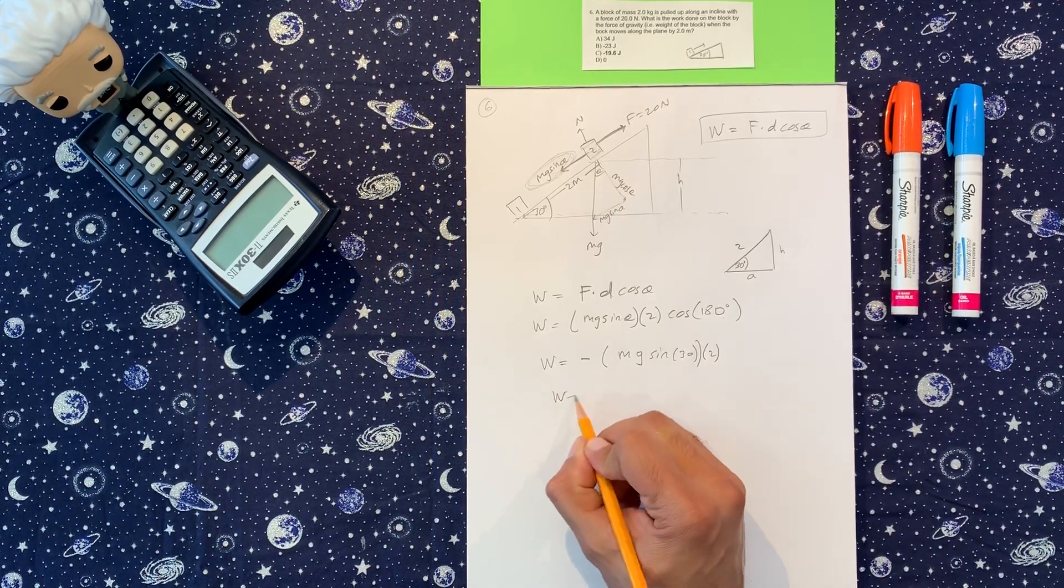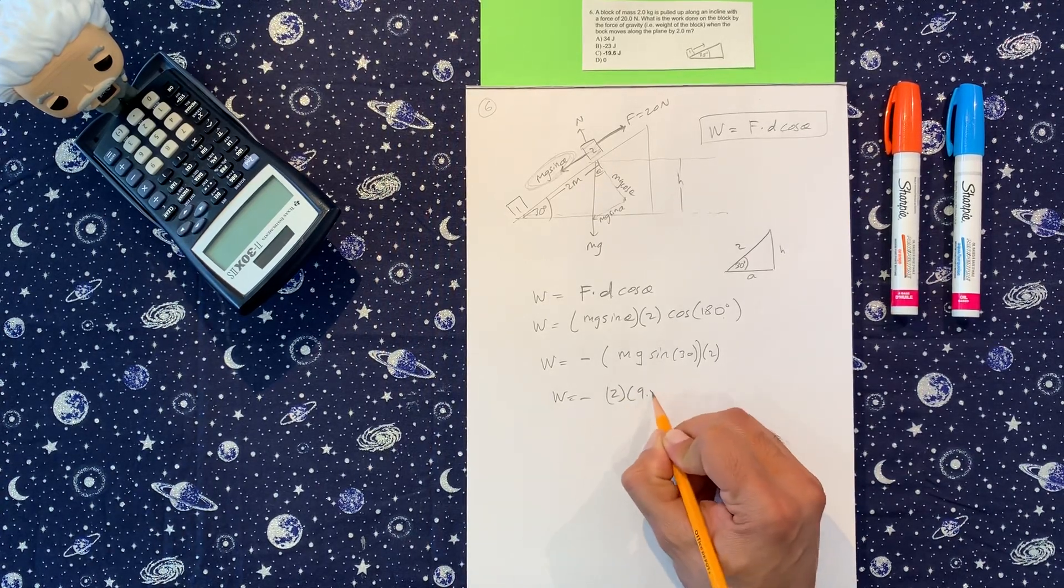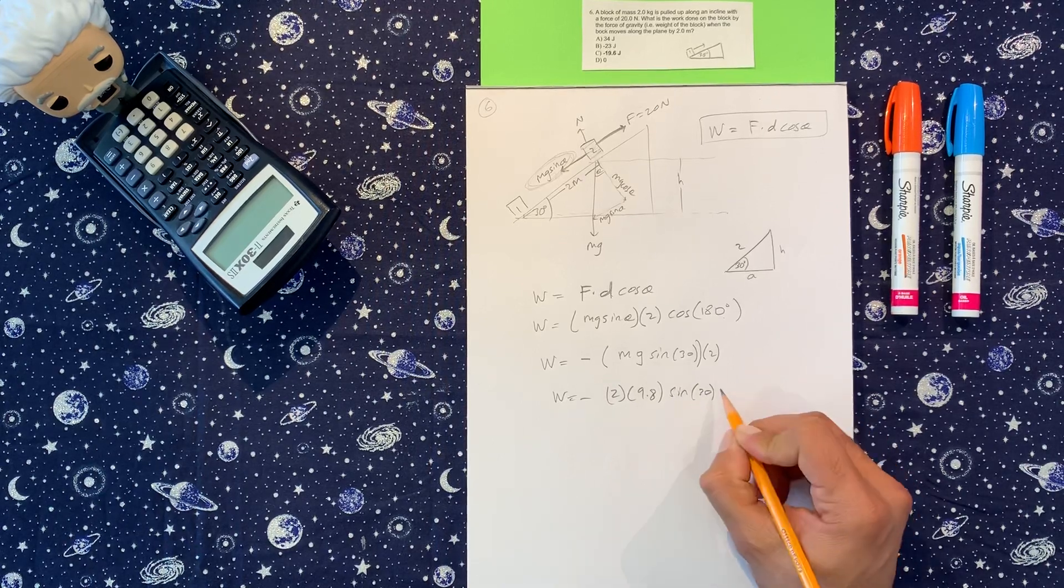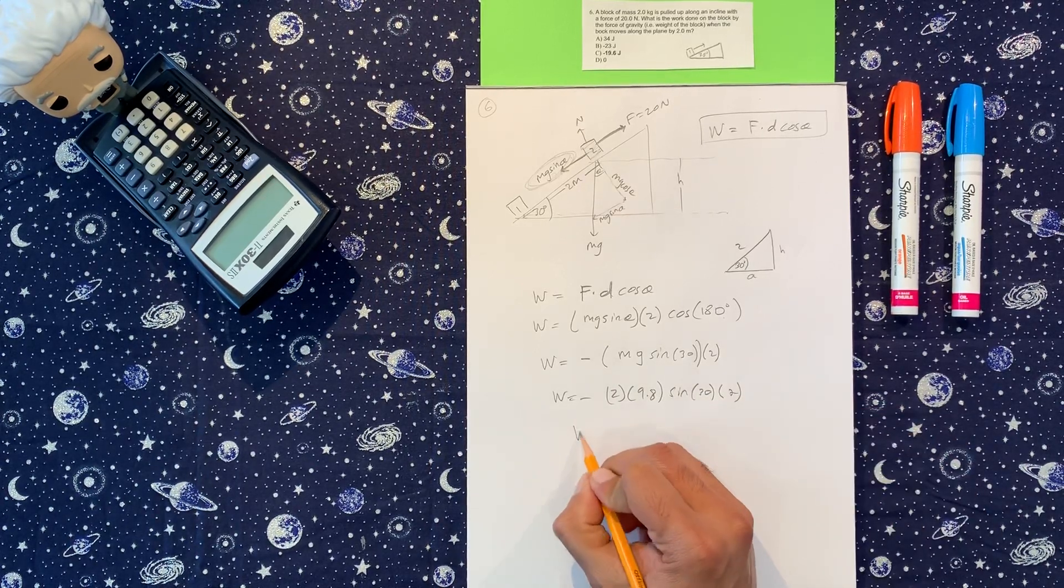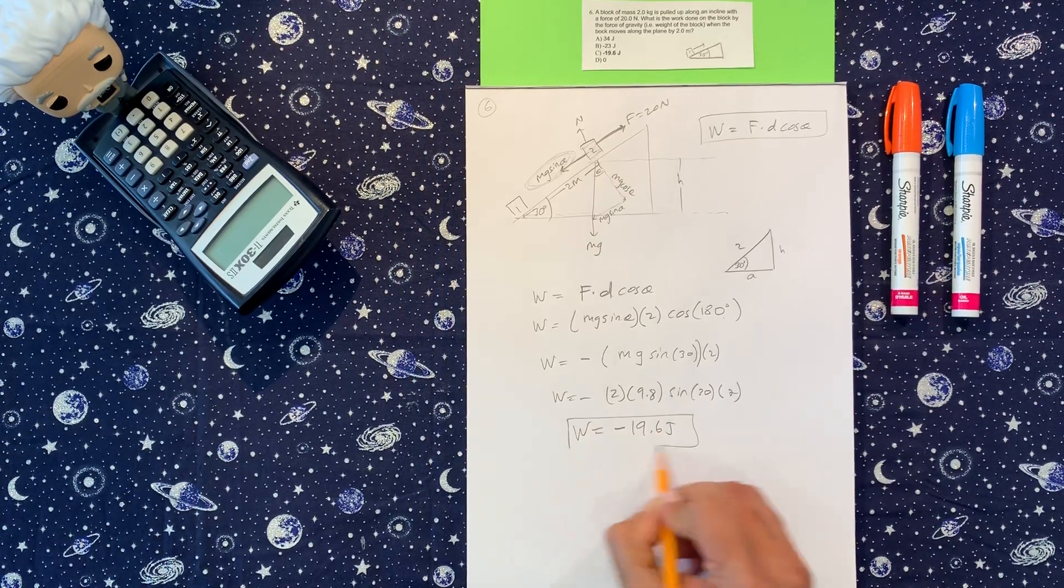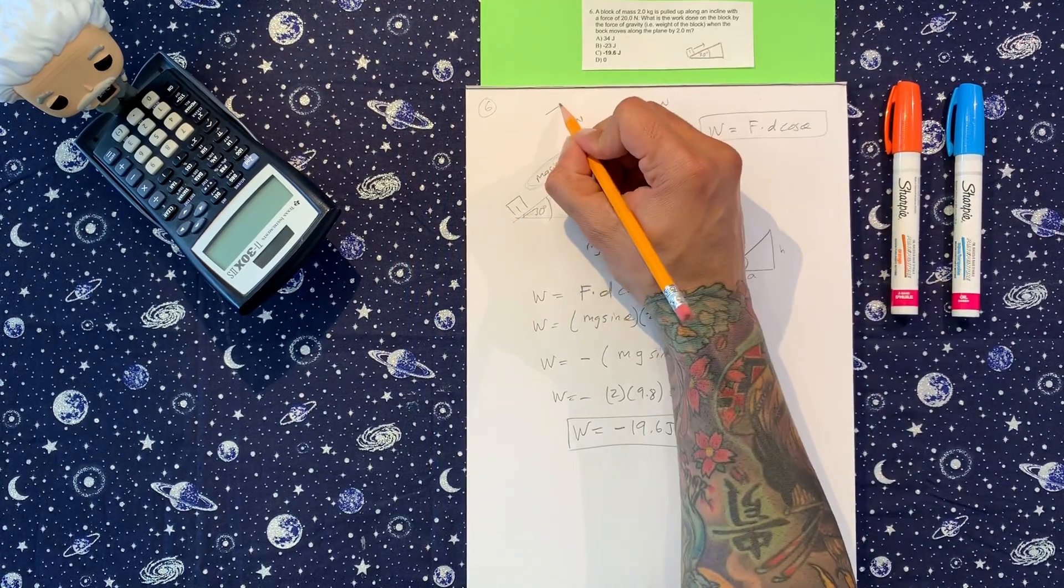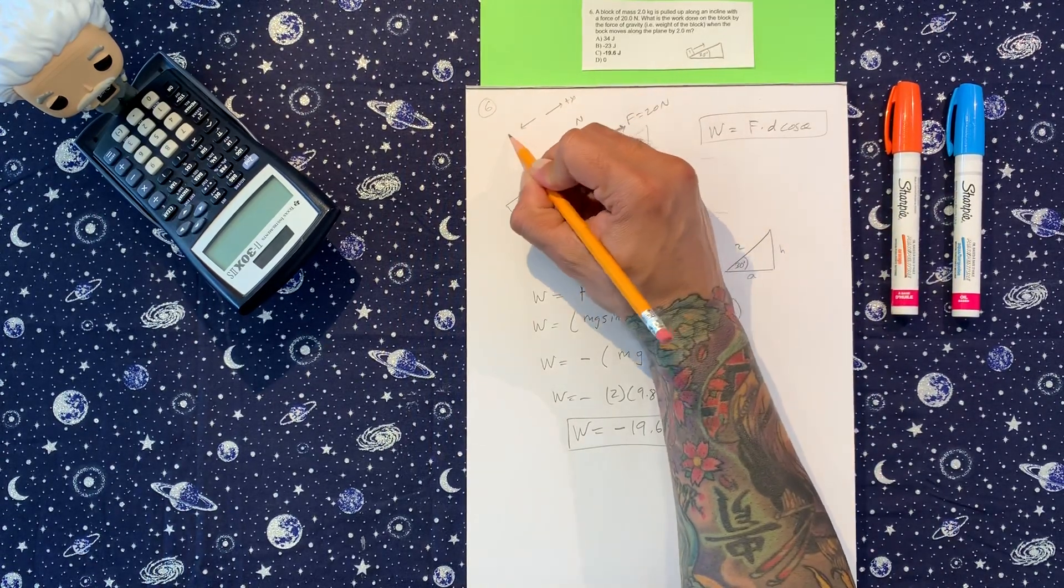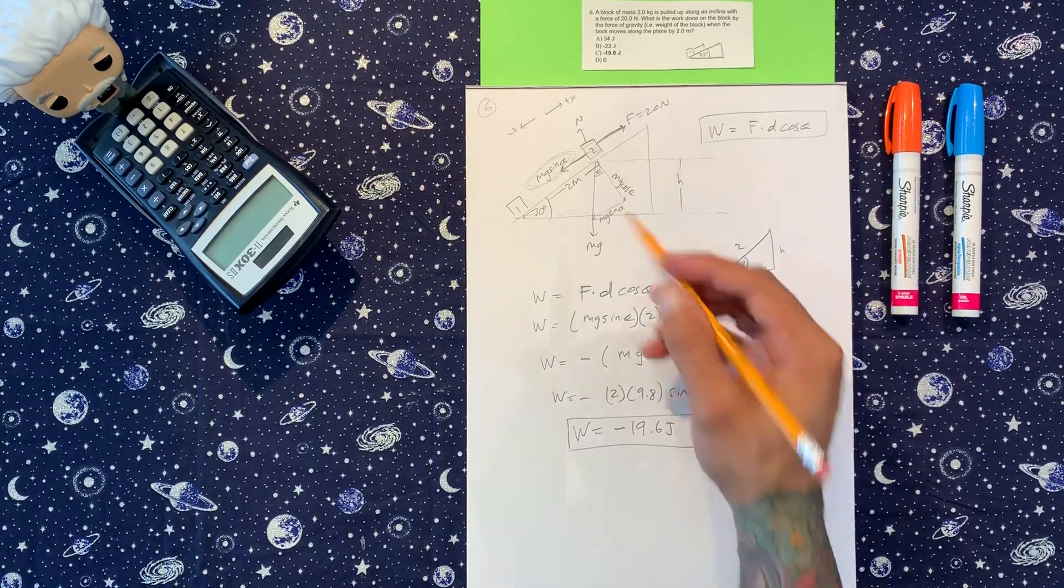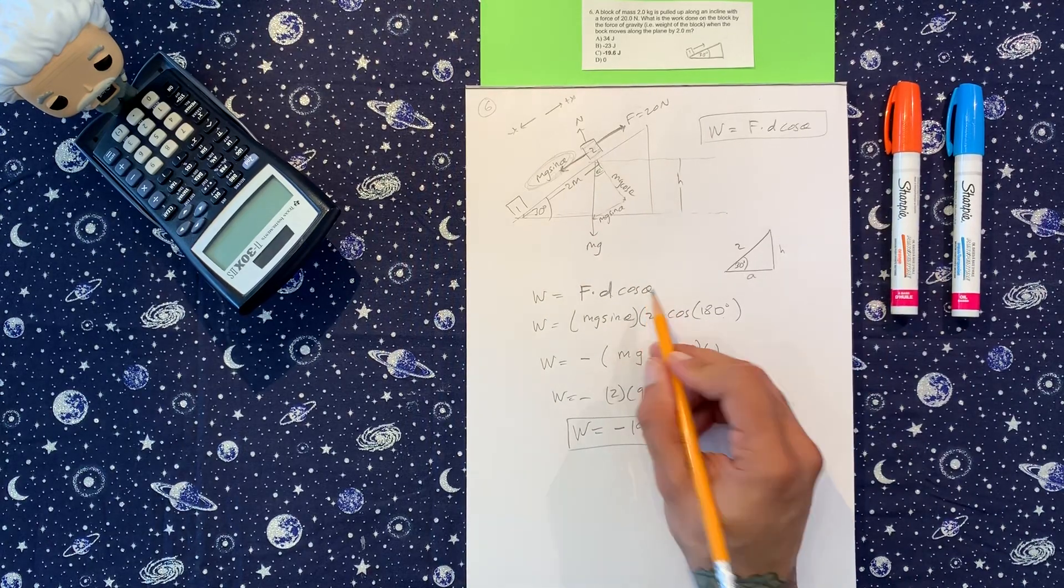Mass is 2 kilograms. This is 9.8. Sine of 30, and this is 2. So the work done is going to be negative 19.6 joules. And negative because the force of gravity is opposing motion. Remember, this way is positive x. This way is negative x. So it makes sense that it's negative. But this is where the negative comes from, because the force is this way. Displacement is the other way. So the angle between them is 180.